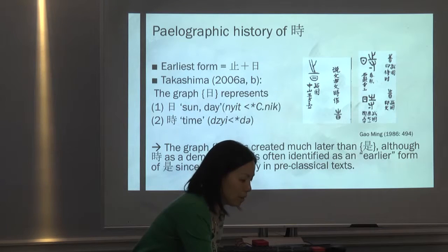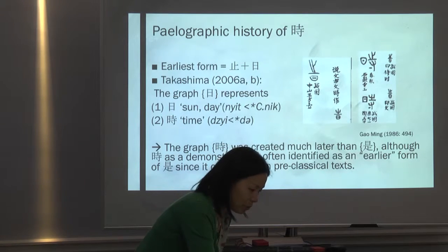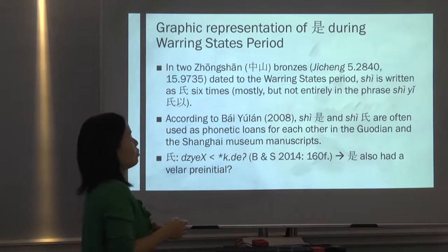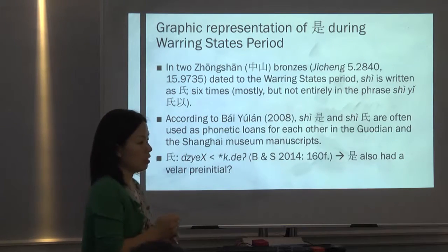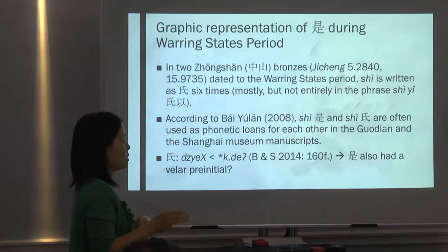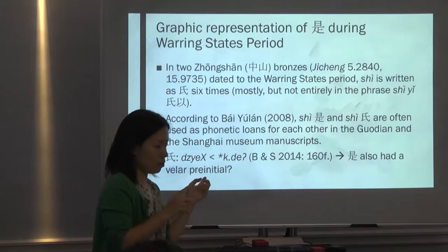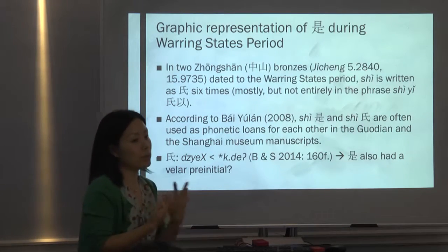There is something also remarkable about the graphic presentation of shi during the Warring States period. In two Zhongshan bronzes dated to the Warring States period, shi is written six times as the clan-name shi, mostly in the phrase of shi but not always. And in the manuscripts, this shi and the clan shi are also found as phonetic loans for each other.